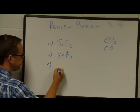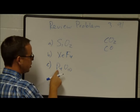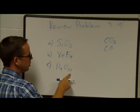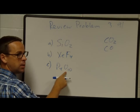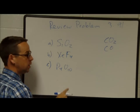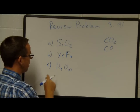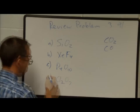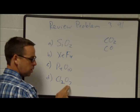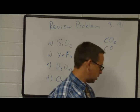P₄O₁₀ is tetraphosphorus decaoxide — 'deca' for 10, like decimal or decade. The last one, Cl₂O₇, is dichlorine heptaoxide — 'hepta' for 7.